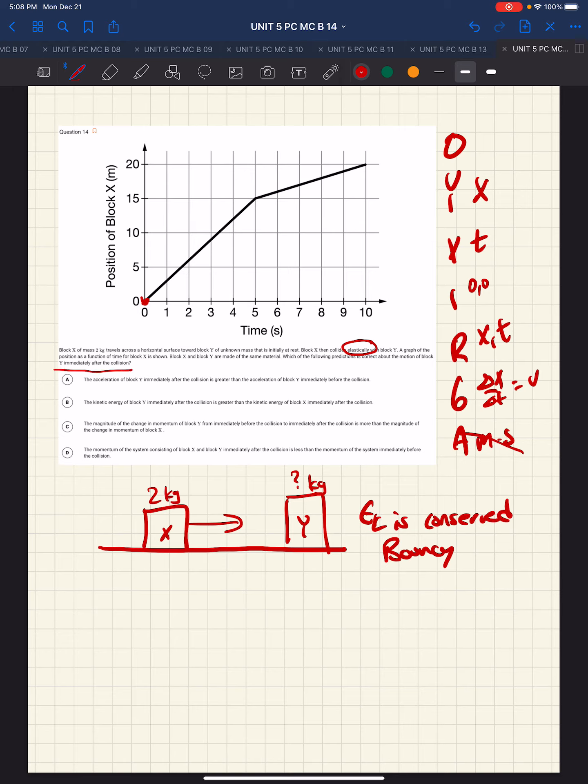Which of the predictions are correct about the motion of block Y immediately after the collision? So, a couple things to notice from the graph. We have two distinct portions. We have this part where we have a velocity that is equal to 15 over 5 or 3 meters per second. And then afterward, it has a velocity of 5 over 5 or 1 meter per second. This is for block X.